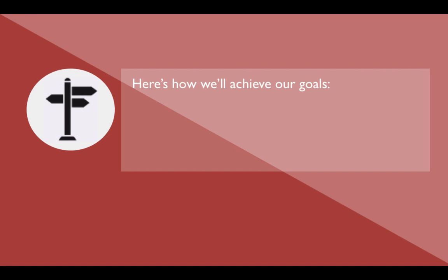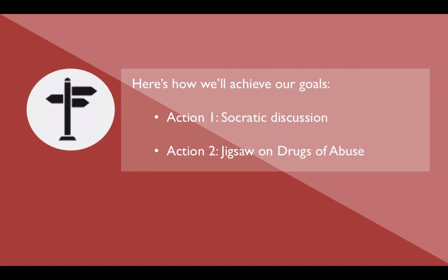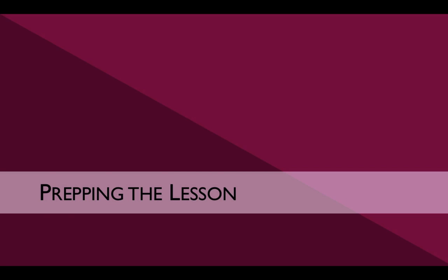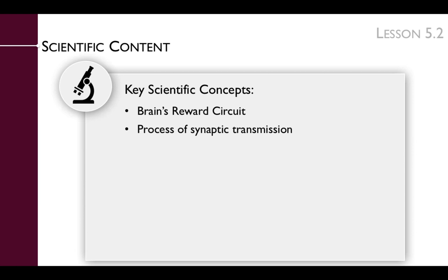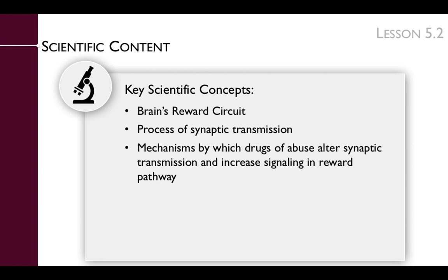We'll achieve these goals with a Socratic discussion and a jigsaw on drugs of abuse. To prepare for this lesson, you'll need to review the key scientific concepts presented in it. They include the brain's reward circuit, the process of synaptic transmission, and the mechanism by which drugs of abuse alter synaptic transmission and increase signaling in the reward pathway.